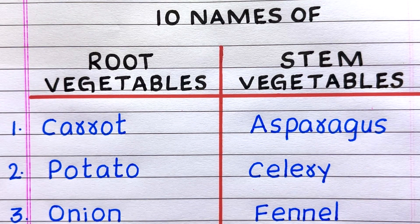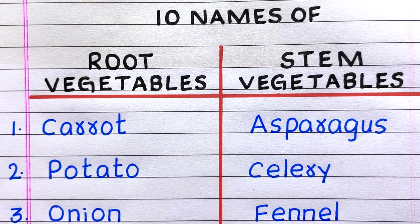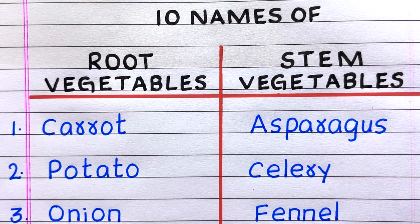First example of a root vegetable is carrot, second potato, third onion. First example of a stem vegetable is asparagus, second celery, third fennel.